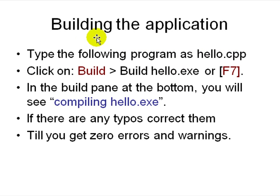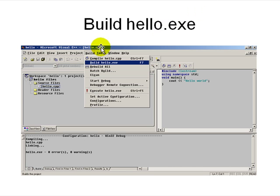After that you have the file and you need to build and compile the program. Go to the Build menu and select Build, or press F7. You will see at the bottom: compiling hello.cpp, then linking. If there are no errors or typos, it will compile with zero errors and warnings, and you get a hello.exe build.